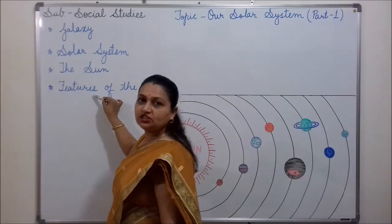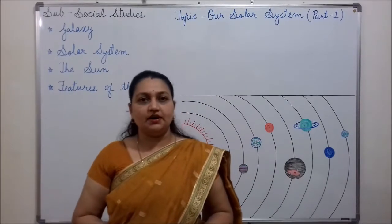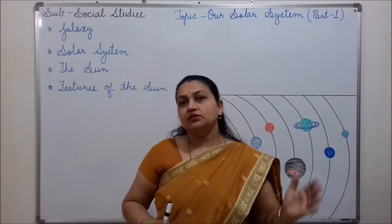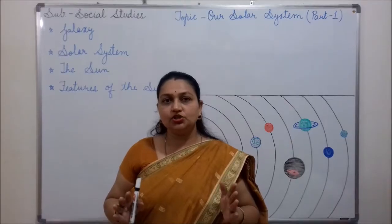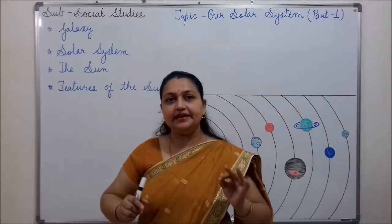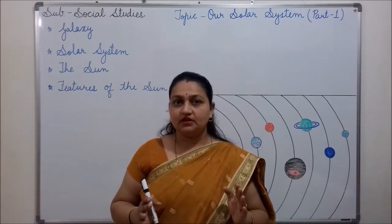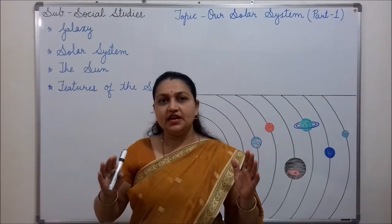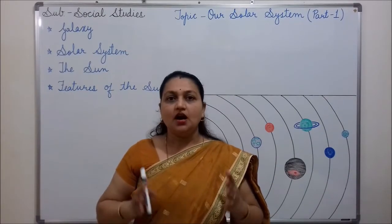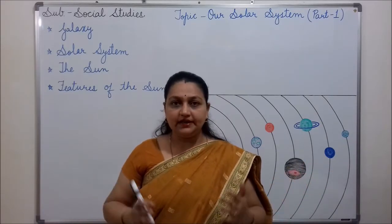When you get up early in the morning and look up at the sky, you see there is a huge ball of light which is shining very bright in the sky. This is the sun. Like this, there are millions of suns in our universe. Our universe is vast and it has many galaxies.